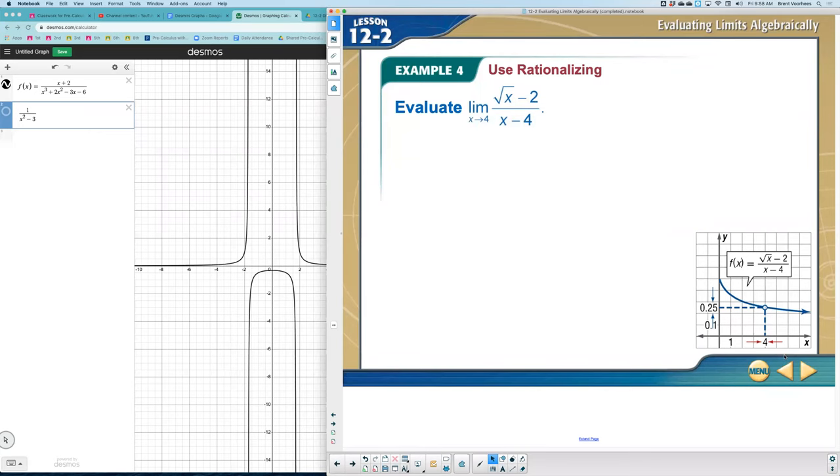Example four says use rationalizing. Typically when we think of rationalizing, we talk about rationalizing the denominator - not leaving a square root in the denominator. Here's a little trick that sometimes might occur when you're trying to solve for a limit. If I use direct substitution right now, we'd have a problem because substituting four in the denominator, four minus four would mean the entire denominator equals zero, and that's a problem.